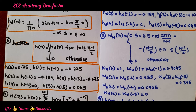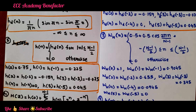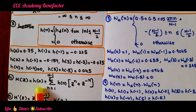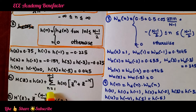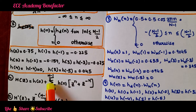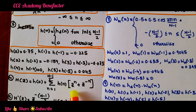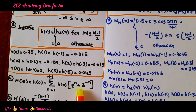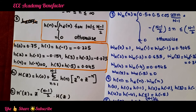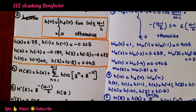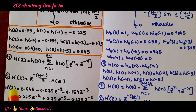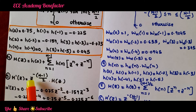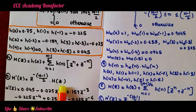After the third step, the fourth step is finding H(z), the transfer function of the filter, given by H(0) + Σ_{n=1}^{(N-1)/2} h(n)[z^n + z^{-n}]. Then the fifth step is computing H'(z), which equals z^{-(N-1)/2} · H(z).